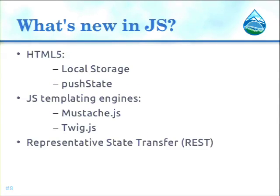Now we have HTML5, which provides lots of cool features like local storage. If you enable local storage, you can store data even if there's no internet connection with a server. And with a special script, when there is a connection, this data will be automatically synchronized with the server. There is also push state — a technology that allows controlling browser history and URLs. Push state replaced the hash character that was in almost any AJAX application, making it difficult to share links and for search engines to index them.